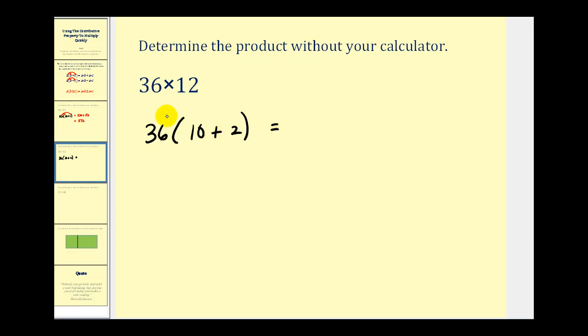Again, the reason that's helpful is 36 times 10 is pretty easy to determine. That would be 360. And 36 times 2 is also pretty easy to determine. That would be 72. And now we can just determine this sum. Here it's a little more involved because we would have to carry. But this would be equal to 432. So 36 times 12 is equal to 432.